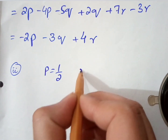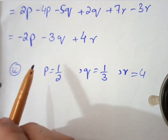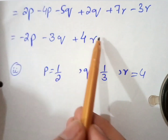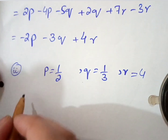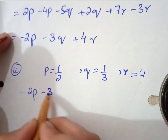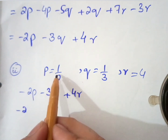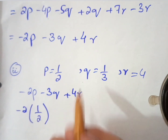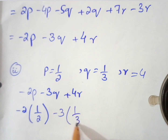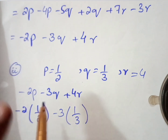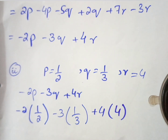In the second part, given p equals 1 over 2, q equals 1 over 3, and r equals 4, find the value of the simplified expression. We have the expression minus 2p minus 3q plus 4r. We substitute the values: minus 2 times (1 over 2), then minus 3 times (1 over 3), then plus 4 times 4. Always place the substituted values inside brackets.